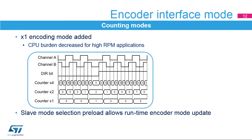The timers in the STM32G4 implement a new counting mode for the encoder interface. In addition to x2 and x4 modes, the x1 mode is supported. In x1 mode, the counter value is updated on a single clock edge depending on direction — the falling edge of channel A when direction equals 0 and the rising edge of channel A when direction equals 1. It may be necessary to switch between encoder modes during runtime, typically at high speed to decrease the update interrupt rate. For this purpose, the SMS field which selects the mode can be preloaded.